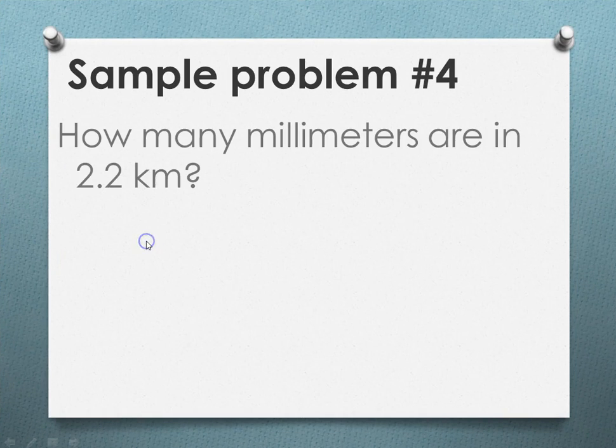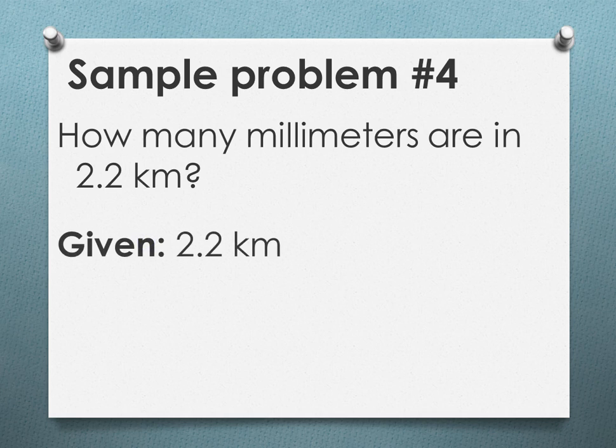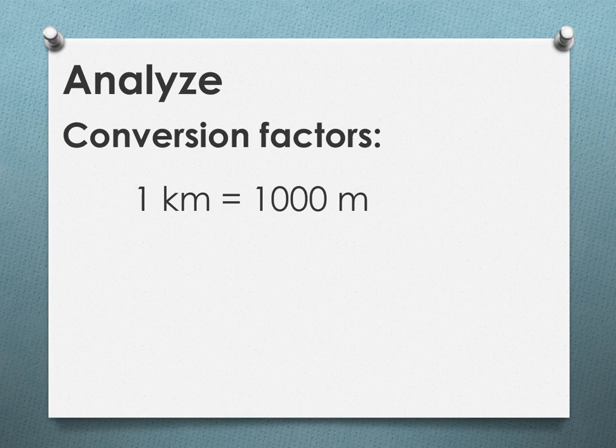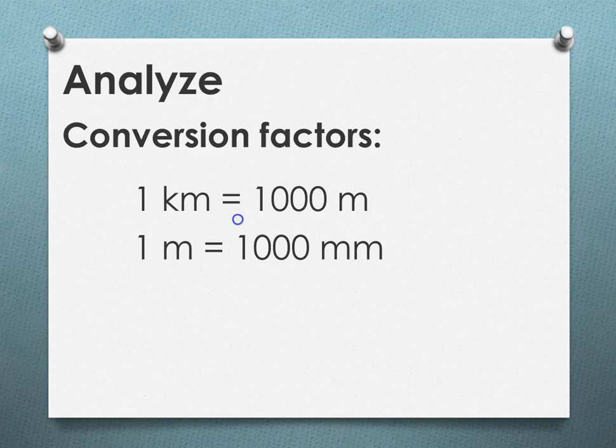Problem four. How many millimeters are in 2.2 kilometers? Our given is 2.2 kilometers. The unknown is how many millimeters. We're going to analyze what are our conversion factors. We know that a kilometer is 1,000 meters. A meter is 1,000 millimeters.